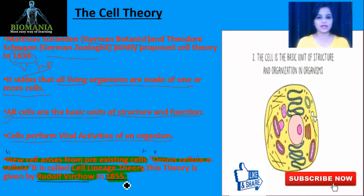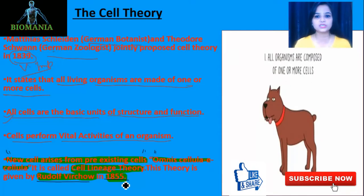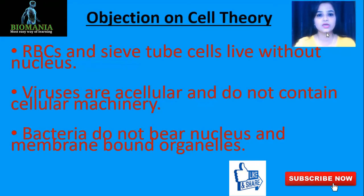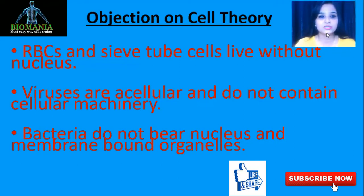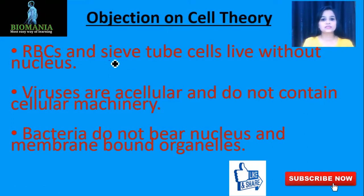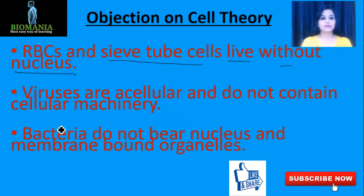Now let's move towards the objections on this cell theory. Objections are actually very good because when objections come, new discoveries occur. The first objection is that RBCs and sieve tube cells live without a nucleus. We keep saying that every eukaryotic cell has a nucleus, but RBCs and sieve tube cells don't have a nucleus — so that is the first objection.